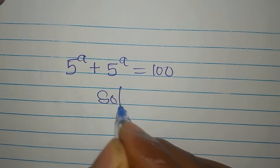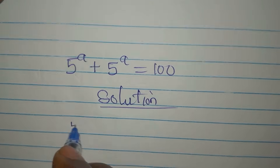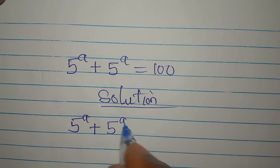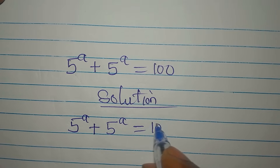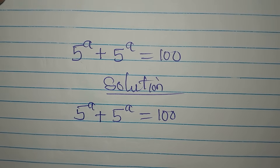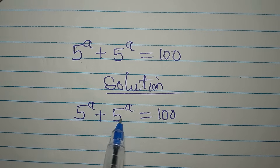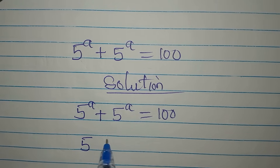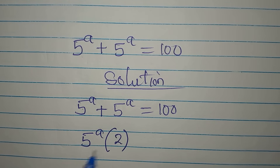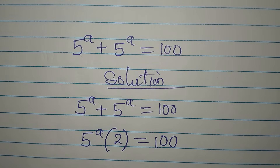Let's solve this problem: 5 to the power of a plus 5 to the power of a equals 100. These two together give us 5 to the power of a in two places — that is, two of 5 to the power of a — and then we have 100.